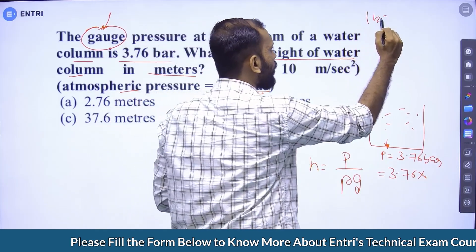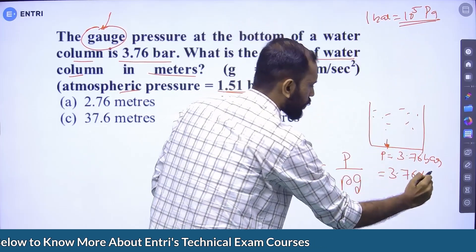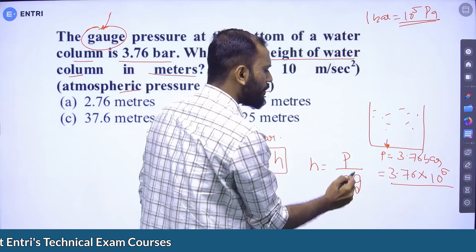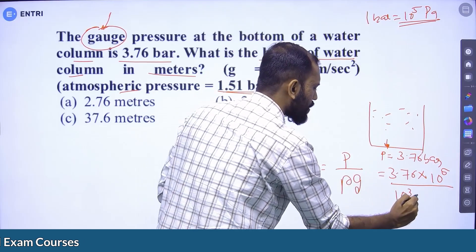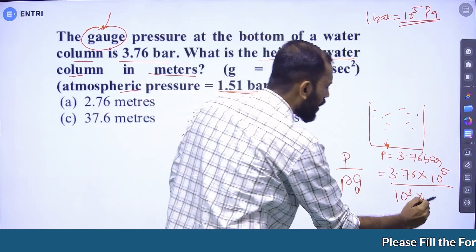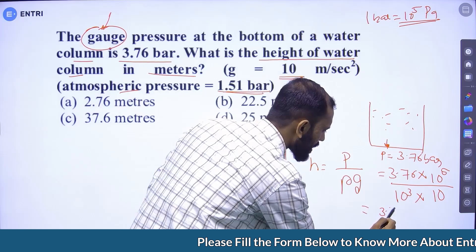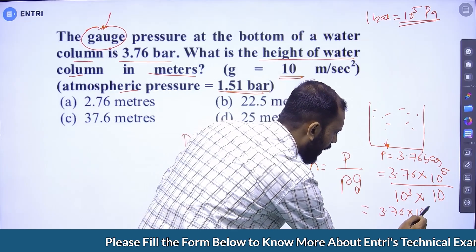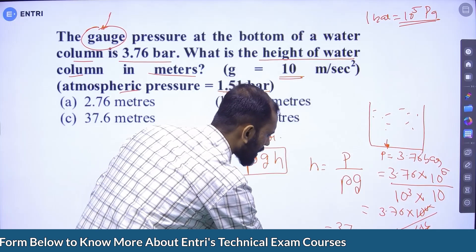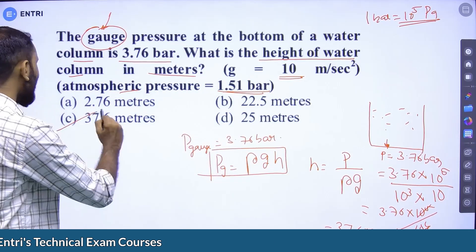Gauge pressure = 3.76 bar, which equals 3.76 × 10 to the power 5 Pascals. Dividing by rho × g: density of water is 10 cubed, g is 10, so denominator is 10 to the power 4. Therefore, h = 3.76 × 10^5 / 10^4 = 37.6 meters of water. Option C is the correct answer.